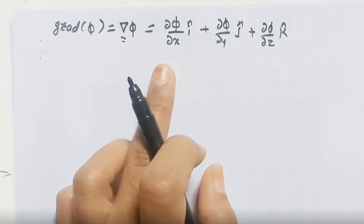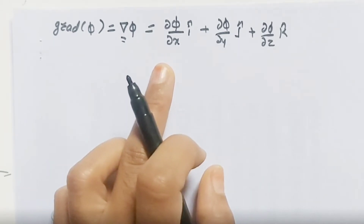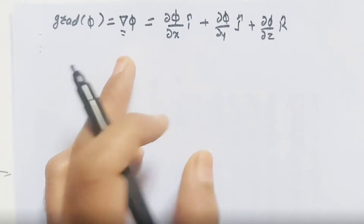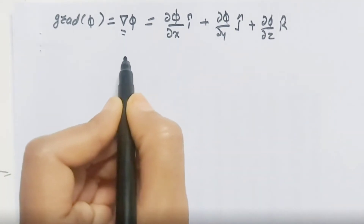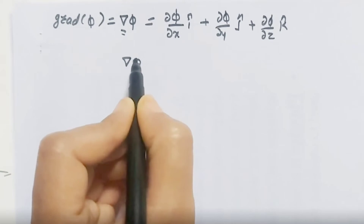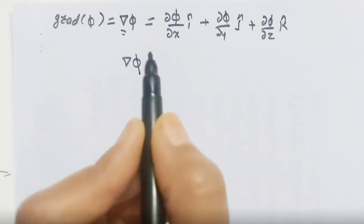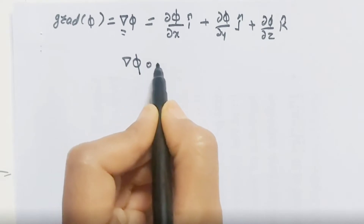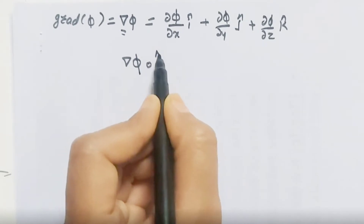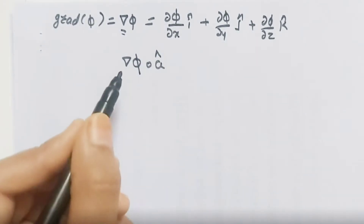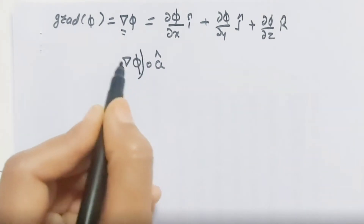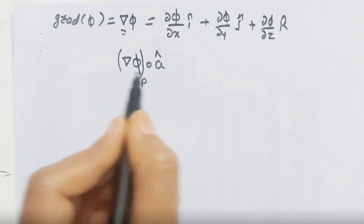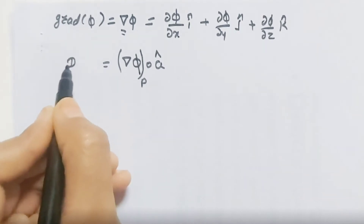This gives the rate of change of scalar point function phi. If we want to find this derivative in some specific direction, suppose we find the rate of change of scalar point function phi in the direction of vector a-bar, we take the dot product with the unit normal vector of a-bar. So delta phi dot a-cap at a certain point is nothing but the directional derivative.